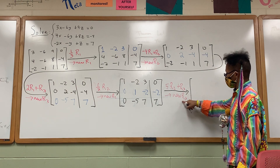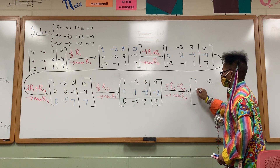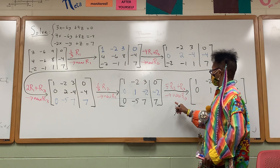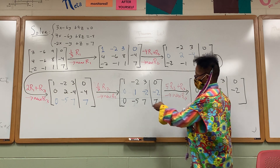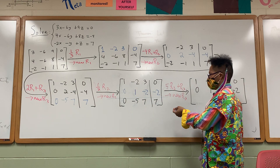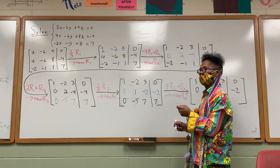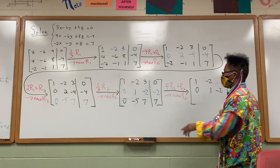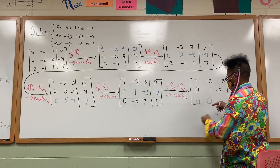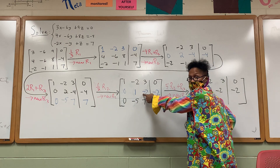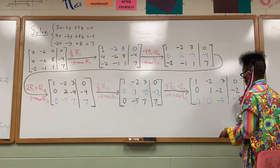Five times row two. Row one and row two stay the same: one, negative two, three, zero; and zero, one, negative two, negative two. Five times zero is zero, added to zero is zero. Five times one is five, added to negative five is zero — as desired. Five times negative two is negative ten, negative ten plus seven is negative three. Five times negative two is negative ten, added to seven is still negative three.